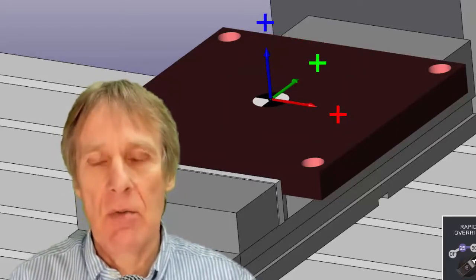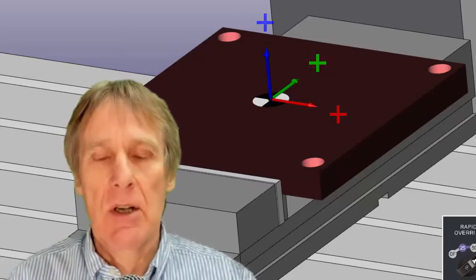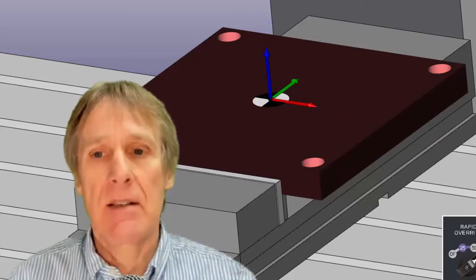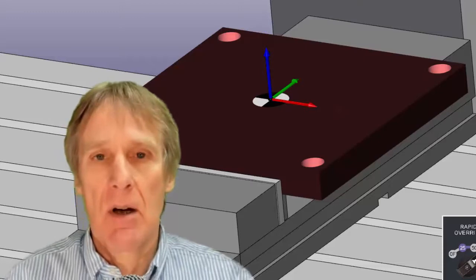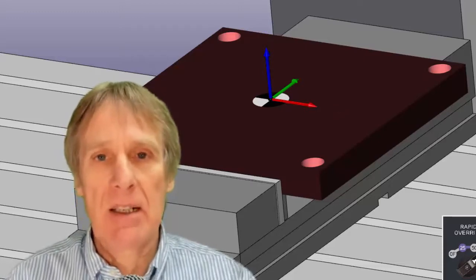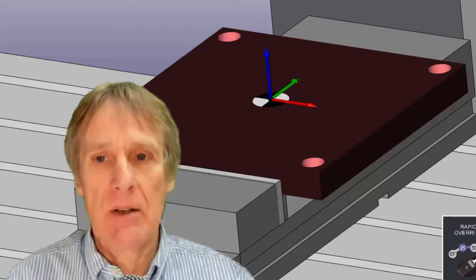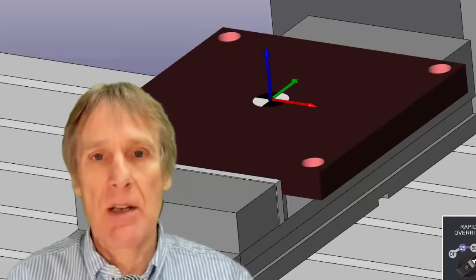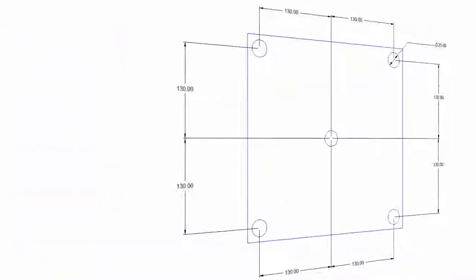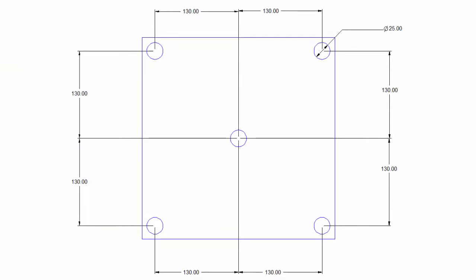On a component, we can set this datum wherever we want it to be. Obviously, we pick a convenient point depending on our drawing, where everything's dimensioned from. On the drawing, this is a drawing of the part. When you look at this drawing, you can see it's obvious that everything's dimensioned from the centre of the part, and therefore the obvious place to choose for your datum is actually that centre point.